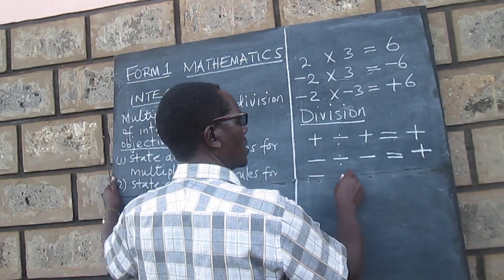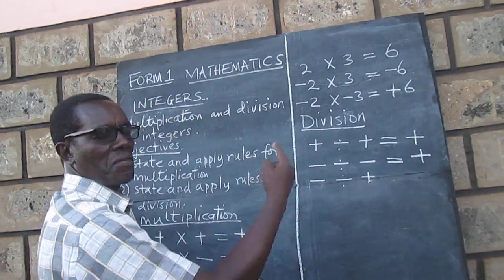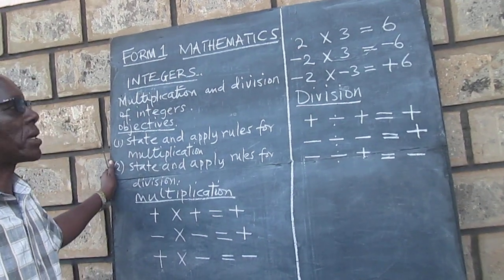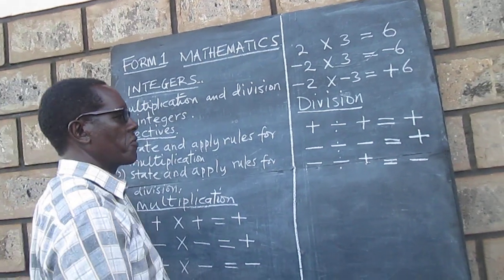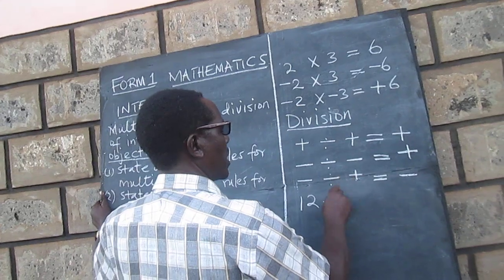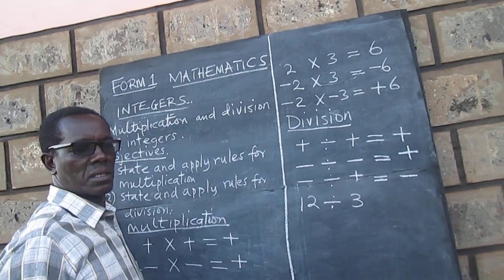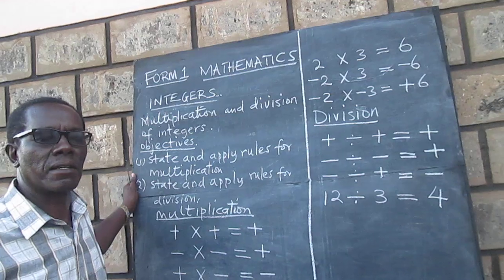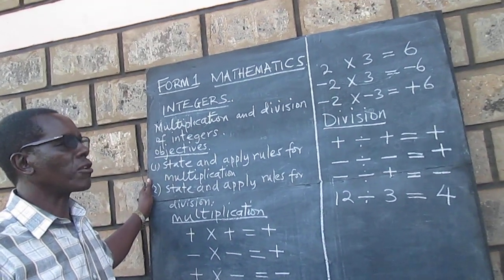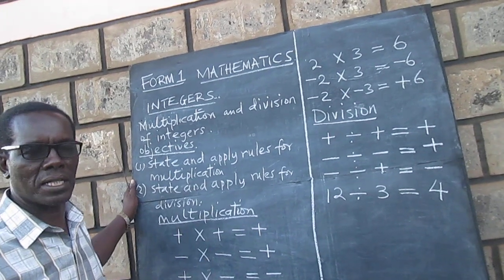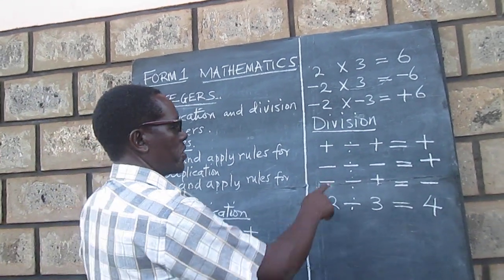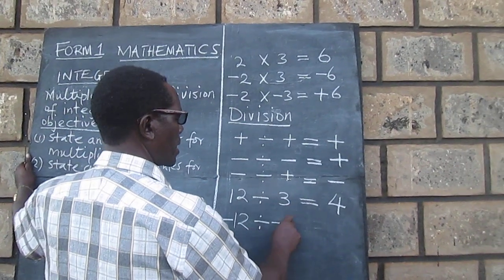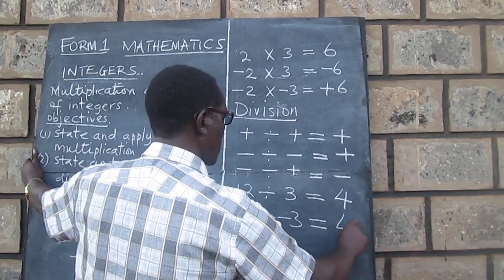So again we say: positive divided by positive gives positive; negative divided by negative gives positive; and when the signs are different, the result will be negative — negative divided by positive, or positive divided by negative, will always give negative. For example, 12 divided by 3 gives 4. And for the second rule, negative 12 divided by negative 3 would give positive 4.